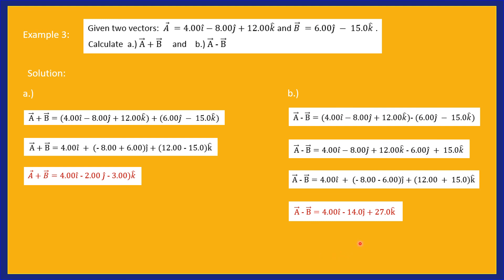If you want to find the magnitude of A − B, take the square root of 4 squared plus (−14) squared plus 27 squared, and that gives us the magnitude of A − B.